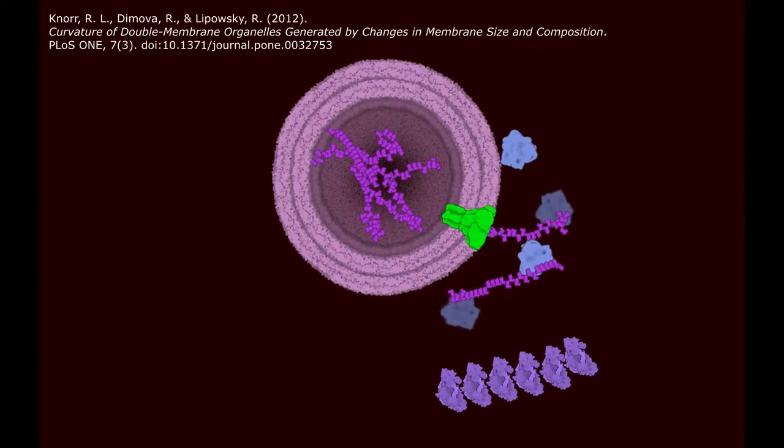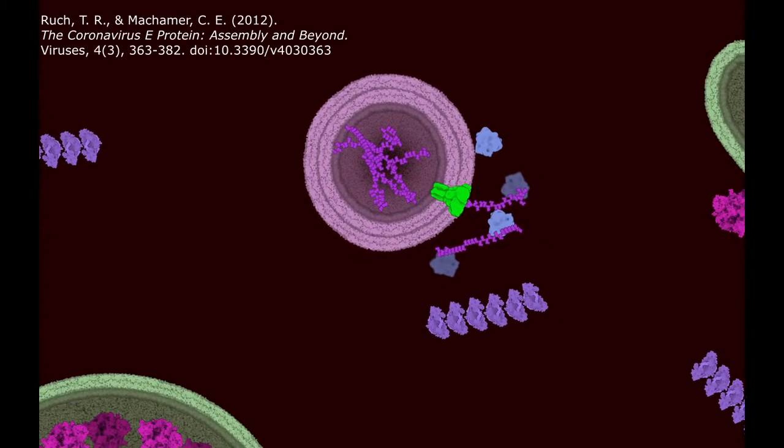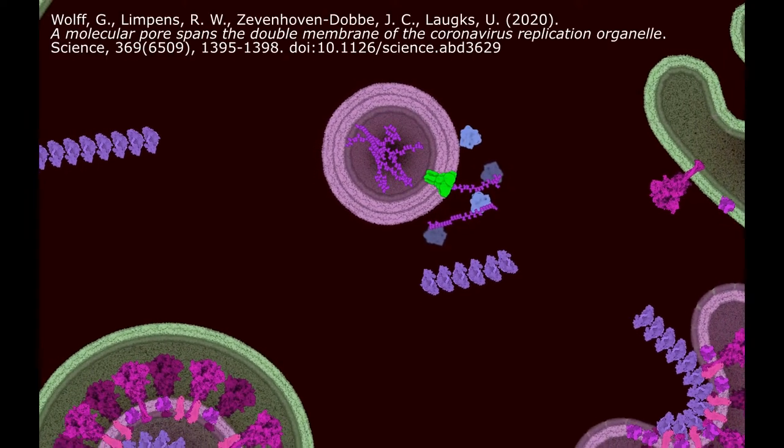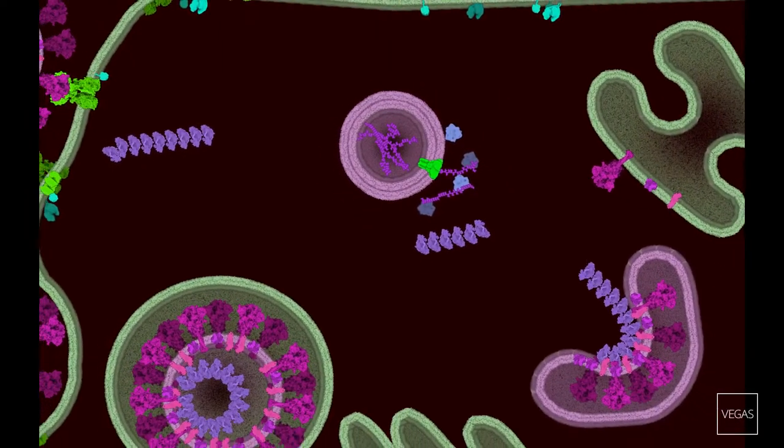During COVID-19 infection, plus-stranded RNA induces bending of paired ER membranes and closes them into double membrane vesicles, also known as DMVs.